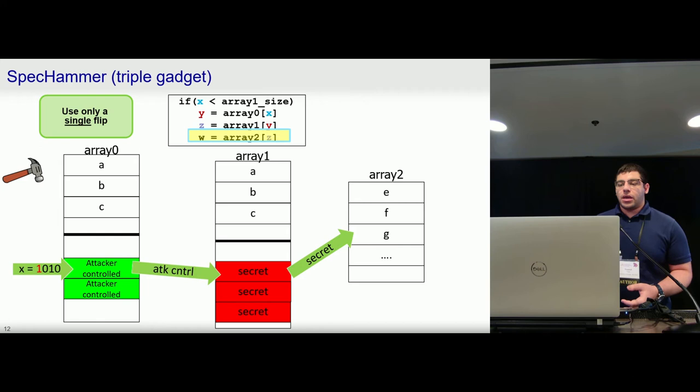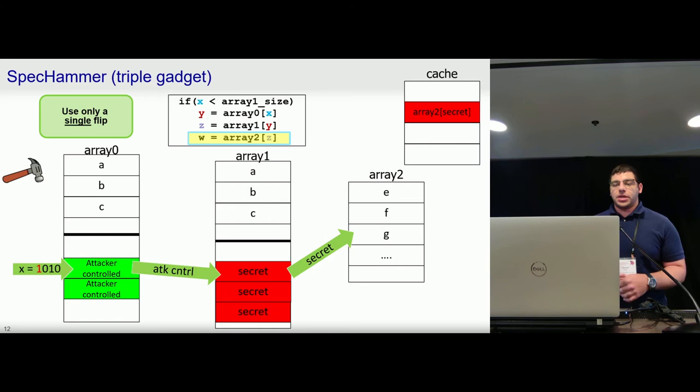And now, just like before, the secret is used to index into another array. This data will get pulled into the cache. Secret-dependent data remaining in the cache allows us to leak it via side channel. And so the advantage here is that we don't need to flip bits to point us directly to our secrets. We just need a flip that will point us from the region of memory we should be inside of to this region of memory that contains data that we control. And from here, we can modify this value to point wherever in memory we want, allowing us to precisely target any value we want to leak.